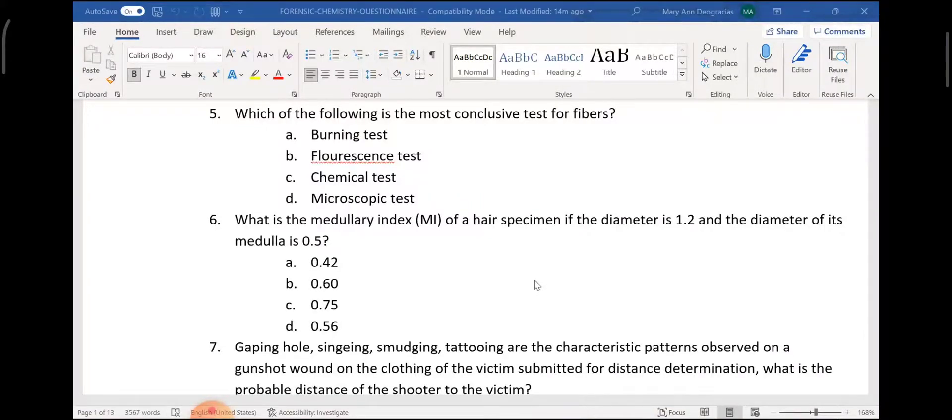Another example is wool. Wool consists of scales, just like hair, because hair is an animal fiber. Wool, silk, and hair all have scales.